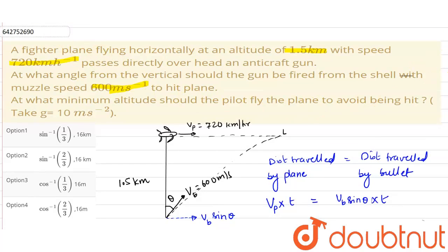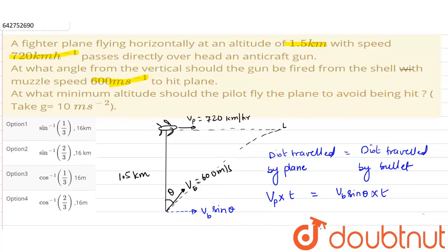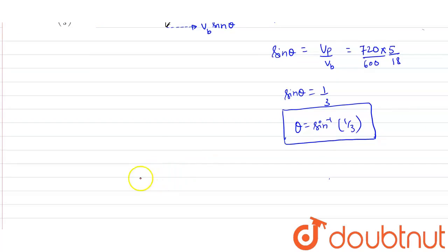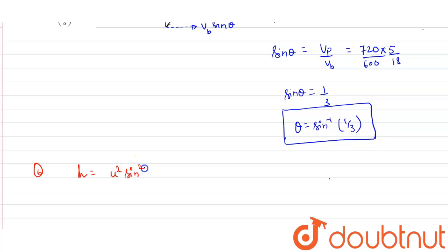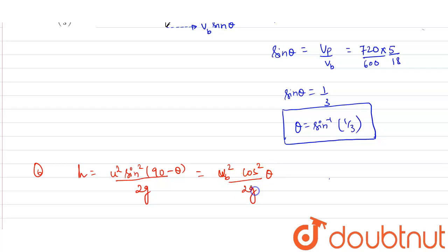For the second part, the minimum altitude the pilot should fly to avoid being hit is the maximum height the bullet can attain. The maximum height is given by u² sin²(90° − θ) divided by 2g, which equals the velocity of bullet squared multiplied by cos² θ, divided by 2g.